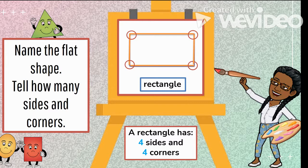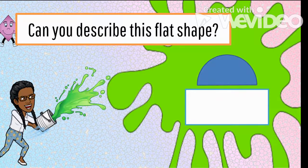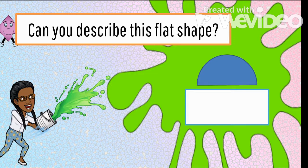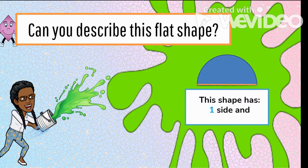Good job, boys and girls. One more. Let's go. Can you describe this black shape? This flat shape has one side and two corners. Good job, boys and girls. Keep up the good work.